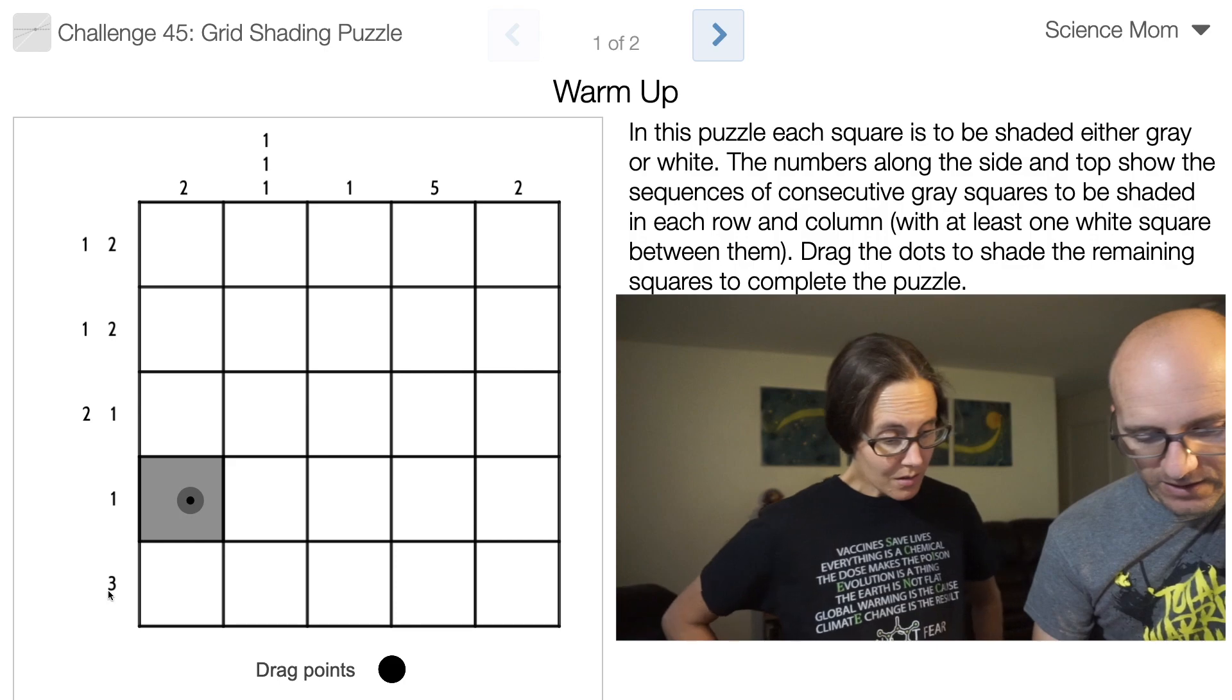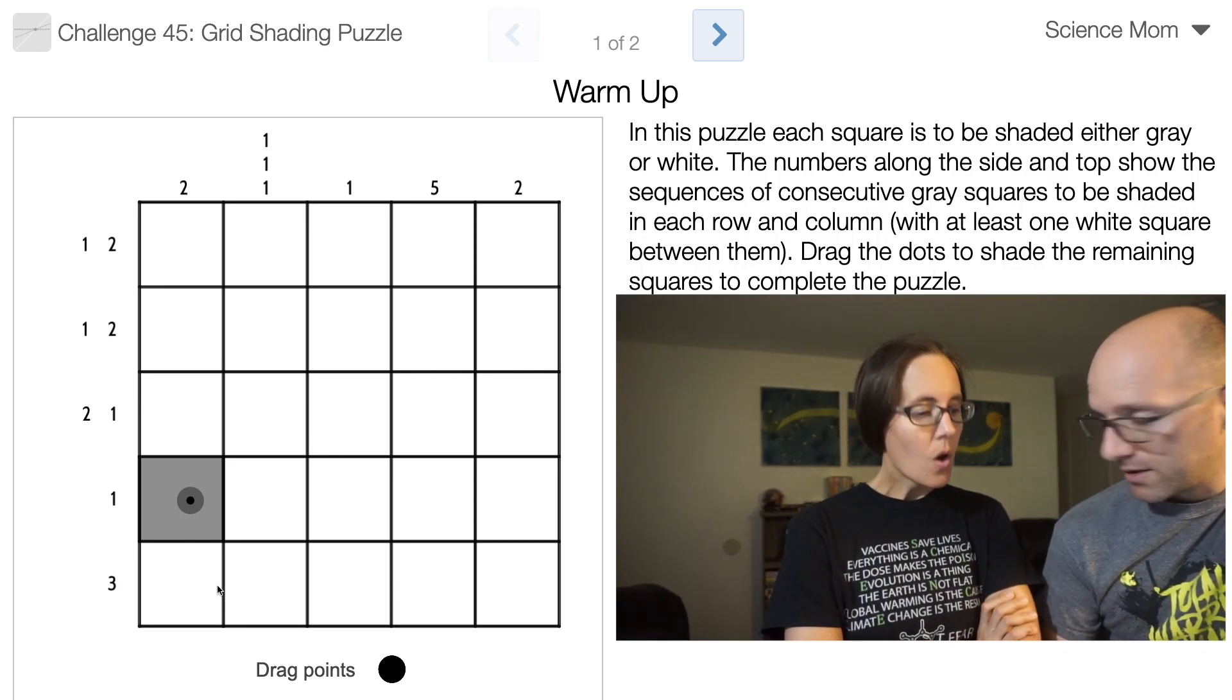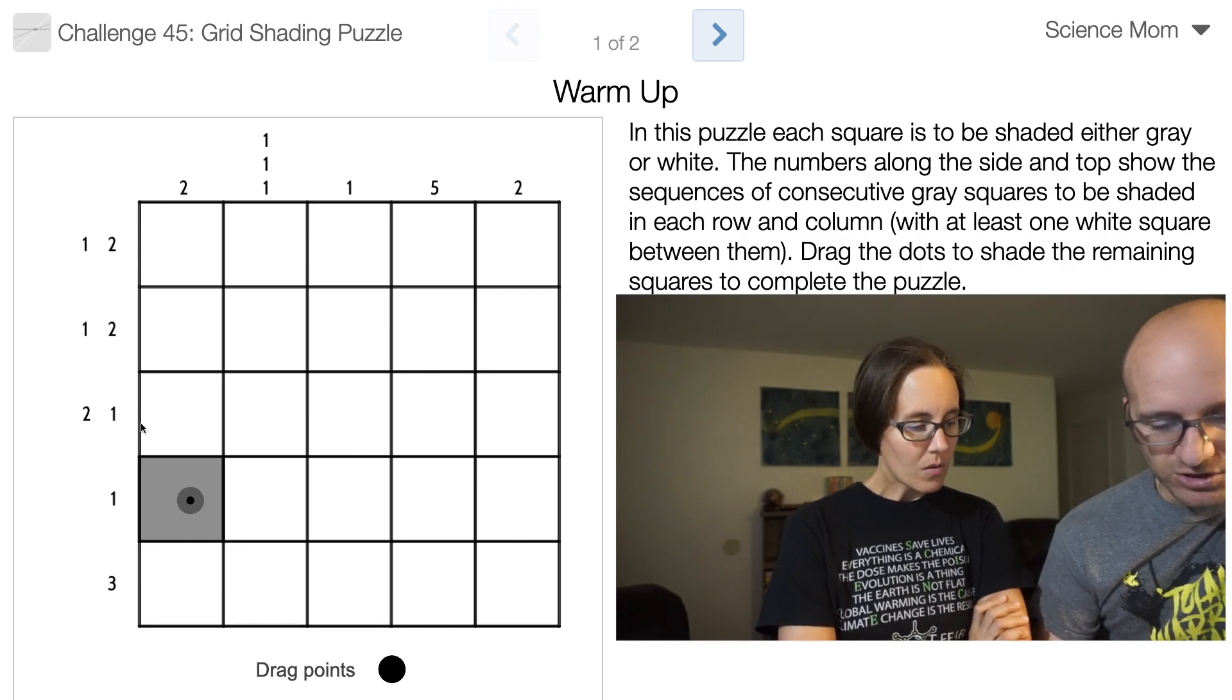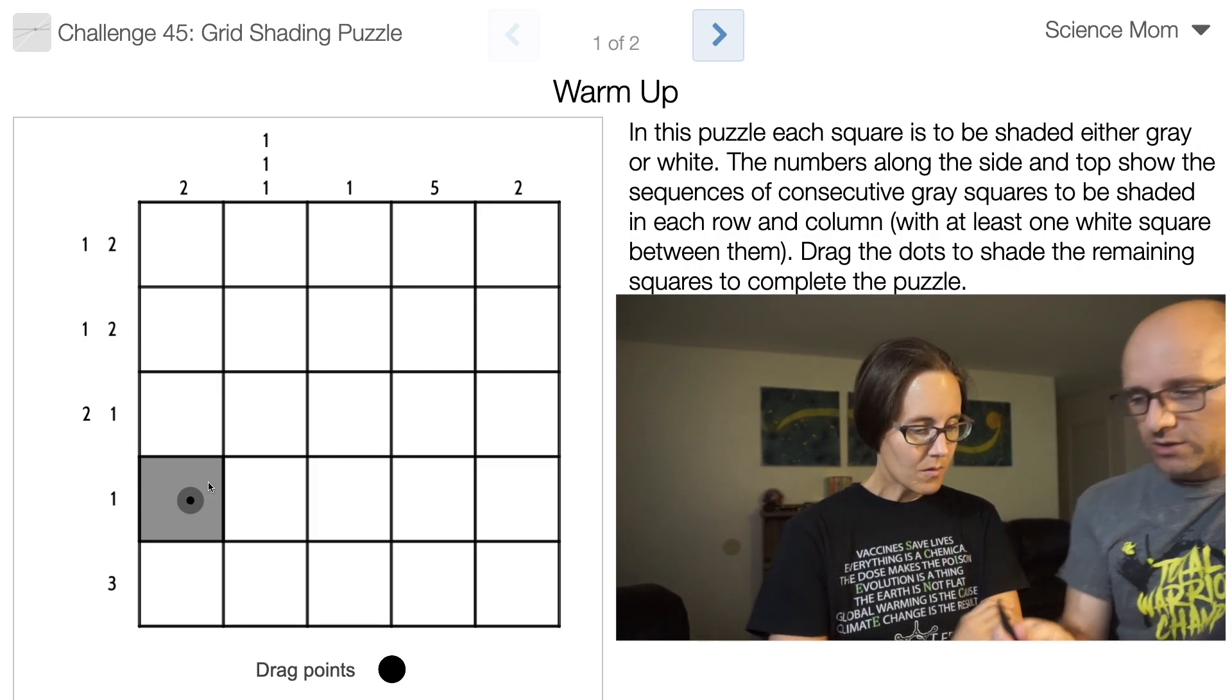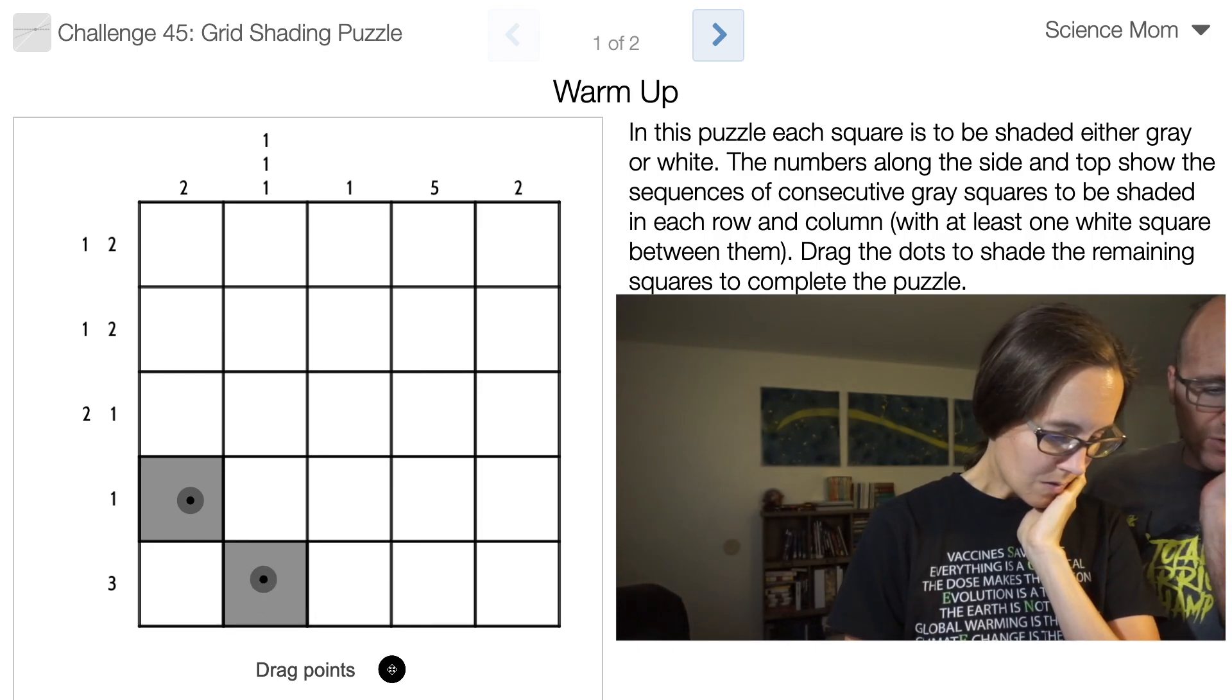So for example, this number one on this row here tells you that there's just one square that gets shaded. This three tells you that there will be three consecutive squares shaded, whereas this two one tells you that there will be two shaded, a gap, and one. So this one is just a warm-up for you to make sure you understand the rules.